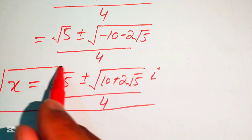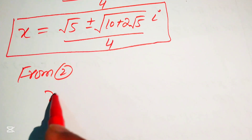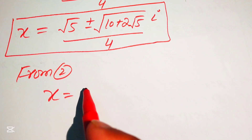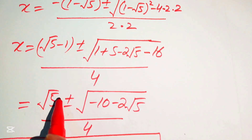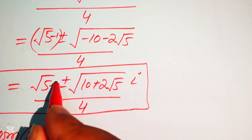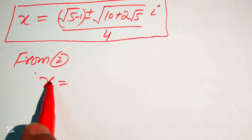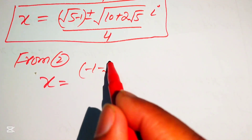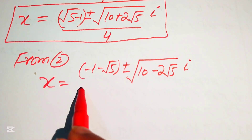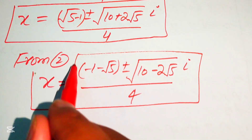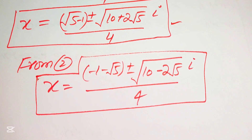From equation 2, the values of x are: minus 1 minus square root of 5, plus or minus square root of 10 minus 2 times square root of 5 times i, divided by 4. These are the final answers. Thank you so much for watching this video — please subscribe to my channel for more exciting videos.